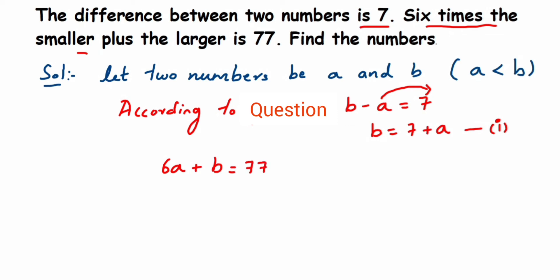Now we're going to get the value of a and b. But we know that b is equal to 7 plus a. So what I'm going to do here is, in place of b, I'm going to substitute 7 plus a in equation 2.